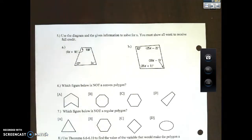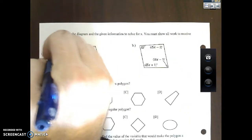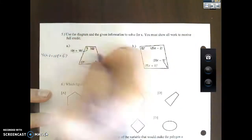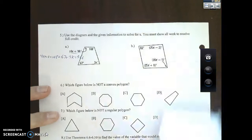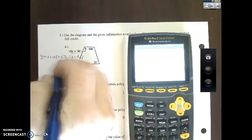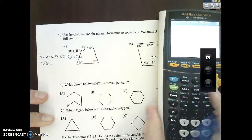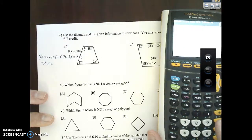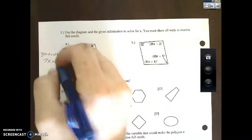Use the diagram and given information to solve for x. You must show all work to receive full credit. It's a four-sided shape. What do the four angles of a quadrilateral add up to? 360. So 4x plus 10 plus 108 plus 67 plus 3x equals 360. I'm going to combine together like terms, so 4x and 3x is 7x. Let's do off to the side then: 10 plus 108 plus 67 equals 185.